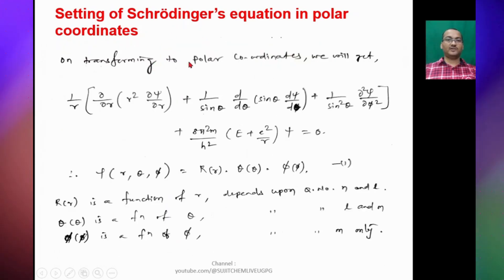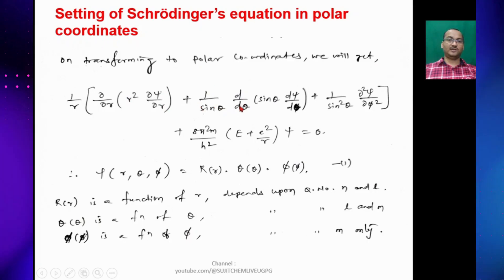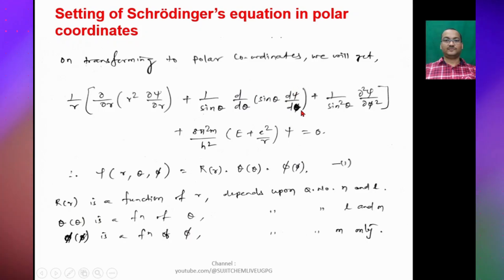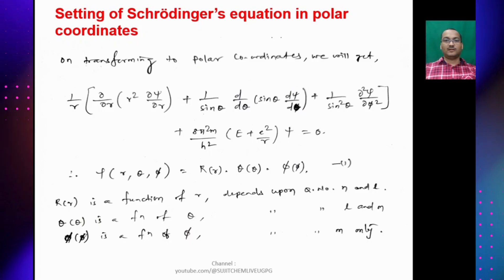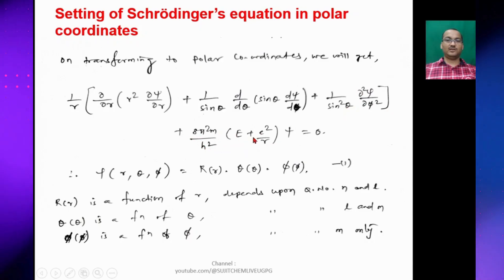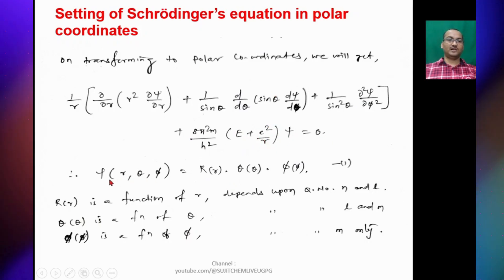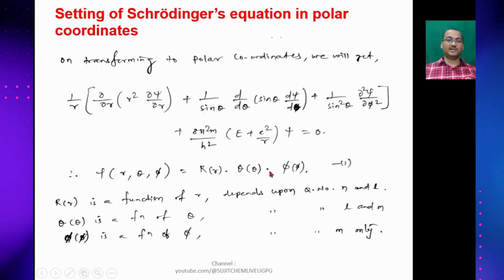On transforming to polar coordinates we get: (1/r)(∂/∂r)(r² ∂ψ/∂r) + (1/sinθ)(∂/∂θ)(sinθ ∂ψ/∂θ) + (1/sin²θ)(∂²ψ/∂φ²) + (8π²m/h²)(E + e²/r)ψ = 0. Here ψ(r,θ,φ) = R(r) · Θ(θ) · Φ(φ).